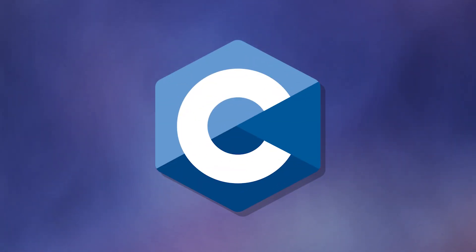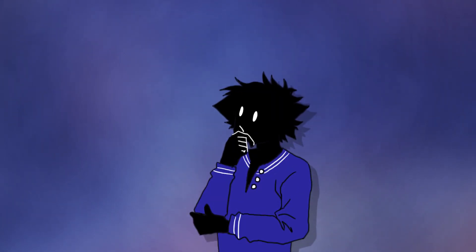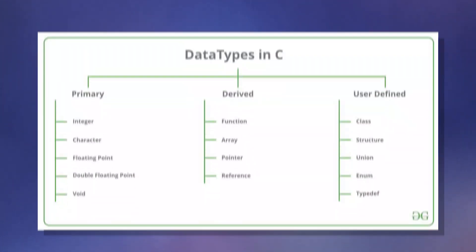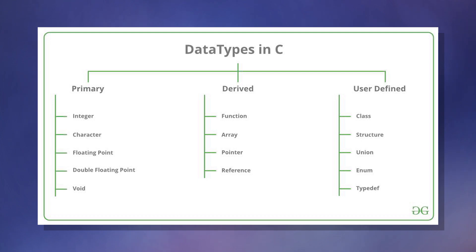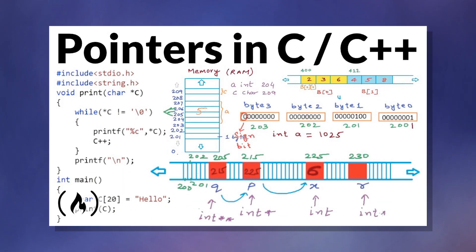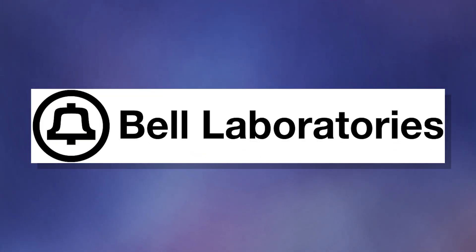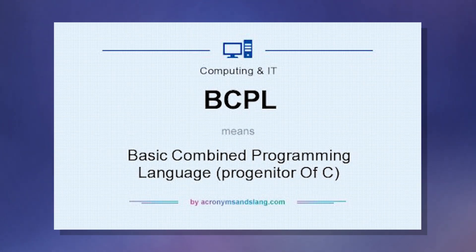B — before one of the most well-known programming languages, C, there actually was a programming language called B. However, the difference is that B does not have data types such as characters, integers, and floats. It also doesn't have structures and pointers, and it's less portable than C. B was originally created at Bell Labs to be a simpler version of the BCPL language.